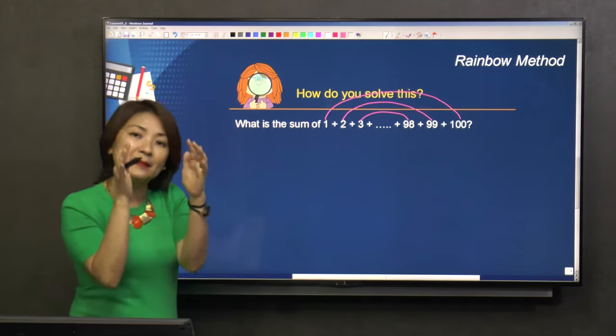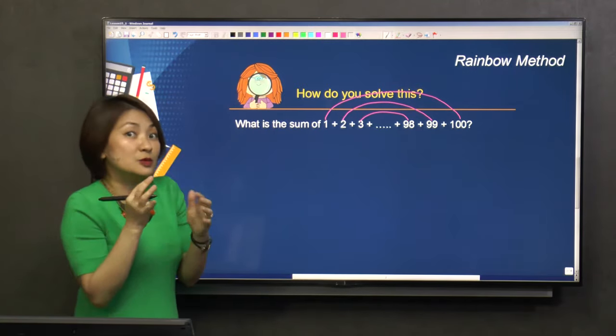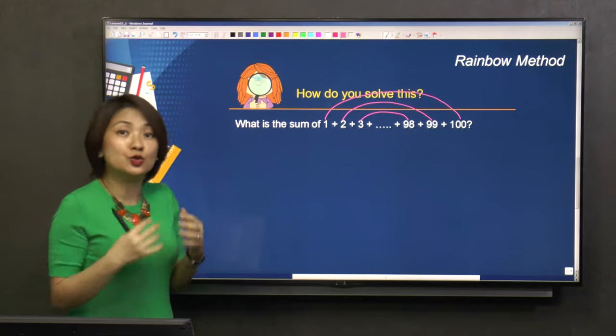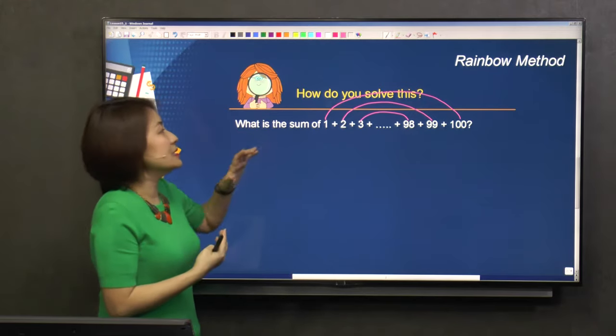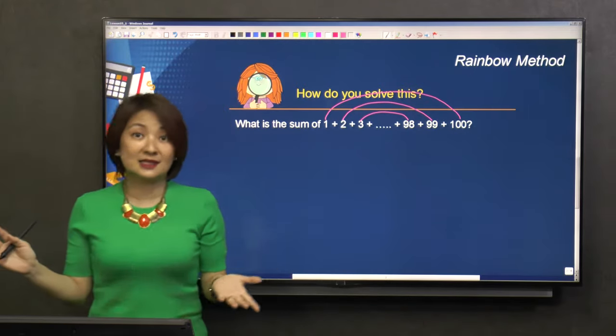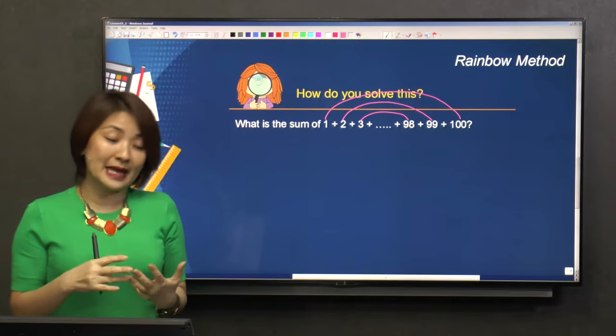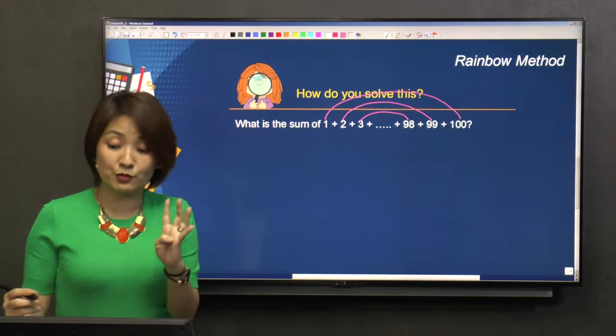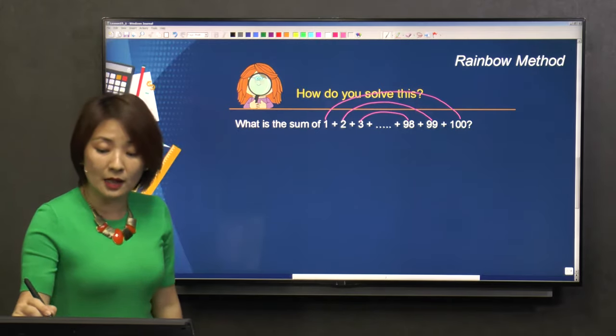But there are some steps you have to remember. You have to understand what you're doing so you can get the answer. It's called the rainbow method because it looks like a rainbow. Now let me introduce you to all the steps. There are only four steps that you have to remember, and I'm going to explain them along the way.